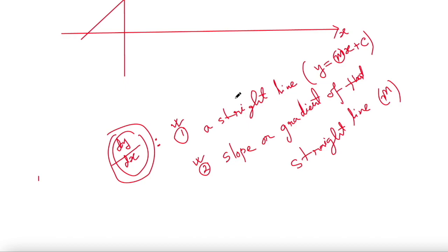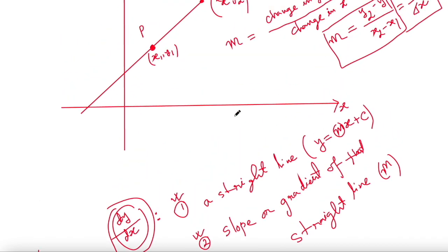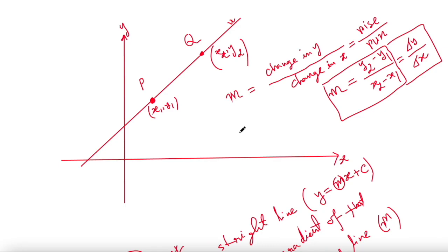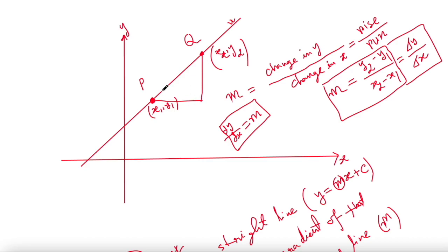For a straight line, dy/dx is nothing but the slope of that straight line. Because at any point on the line, the slope is the same — the rise-run ratio is always constant. So m is fixed throughout the line, and therefore dy/dx for a straight line equals the slope of that straight line.